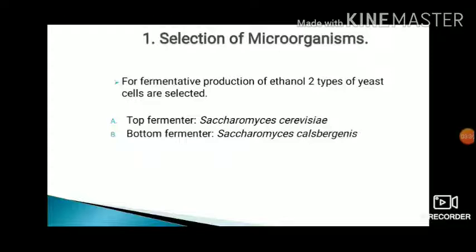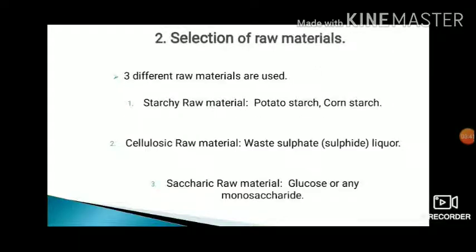The second step is selection of raw materials. There are three types of raw materials: saccharic raw materials such as potatoes, cellulosic raw materials, and starchy raw materials. Saccharic raw materials are called monosaccharides and do not require further fermentation preparation.